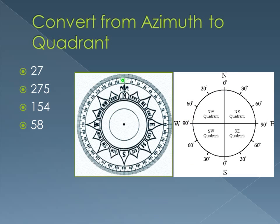In the first case, it's probably the simplest. We start at about 27 degrees — that's right there where my pointer is. So over here, we say north 27 east. So 27 degrees on the azimuth is north 27 east on the quadrant.